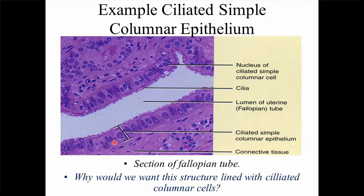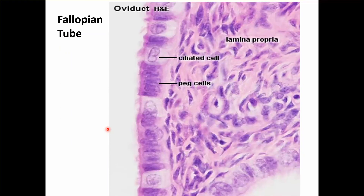There are two types of cells in the fallopian tube: the ciliated columnar cells, and the non-ciliated ones which are called peg cells — they provide support to the ciliated cells. Both are present in the fallopian tube.